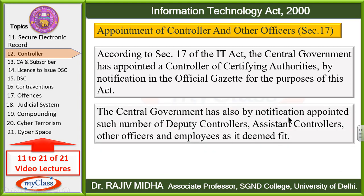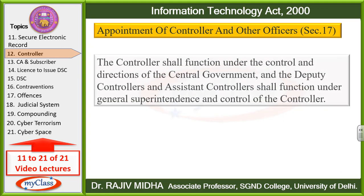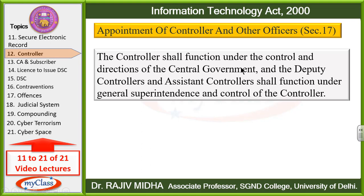The Central Government has also by notification appointed such number of deputy controllers, assistant controllers, other officers and employees as it deemed fit. Central Government ne notify karke deputy controllers, assistant controllers, other officers and employees jitne ki zaroorat thi, un sabko appoint kar diya. The controller shall function under the control and direction of Central Government, aur deputy controllers and assistant controllers shall function under general superintendence and control of the controller.